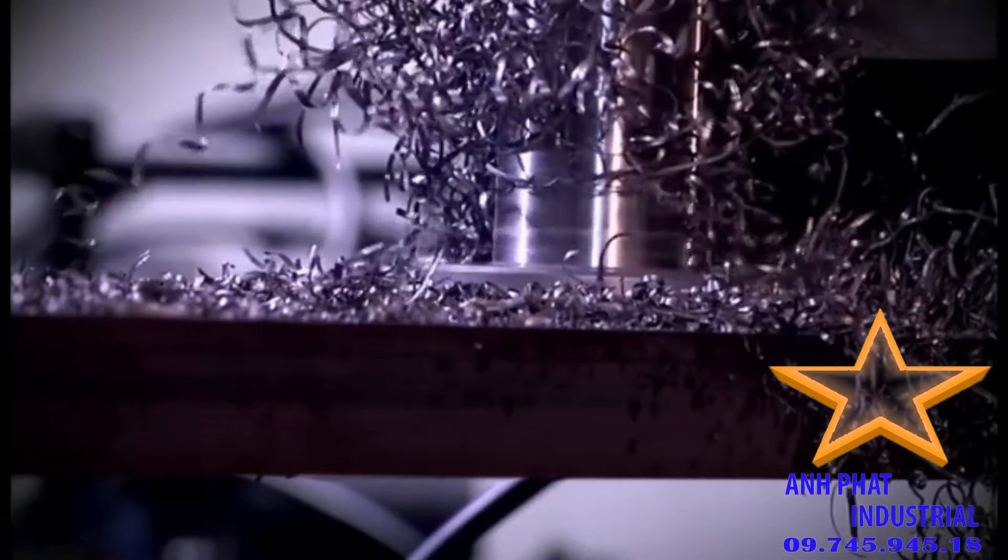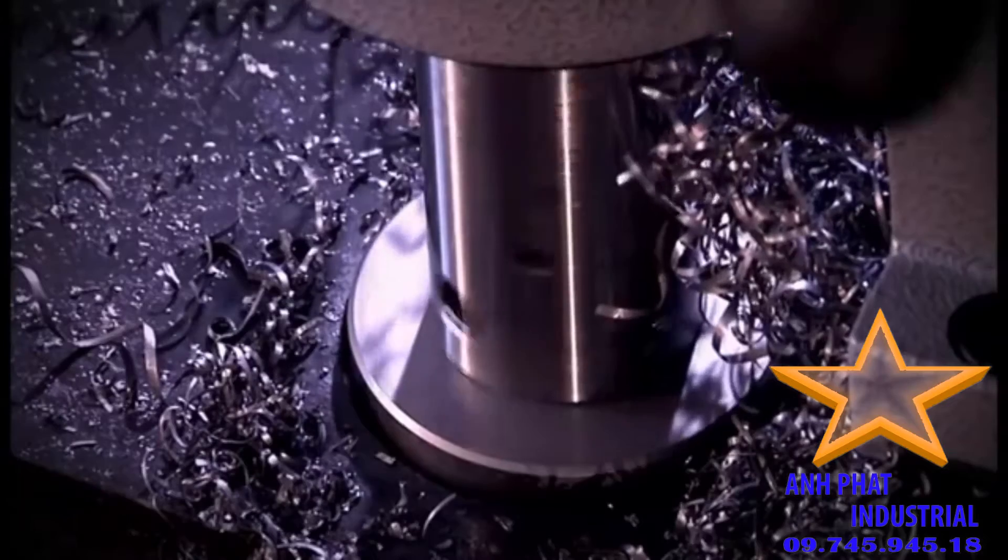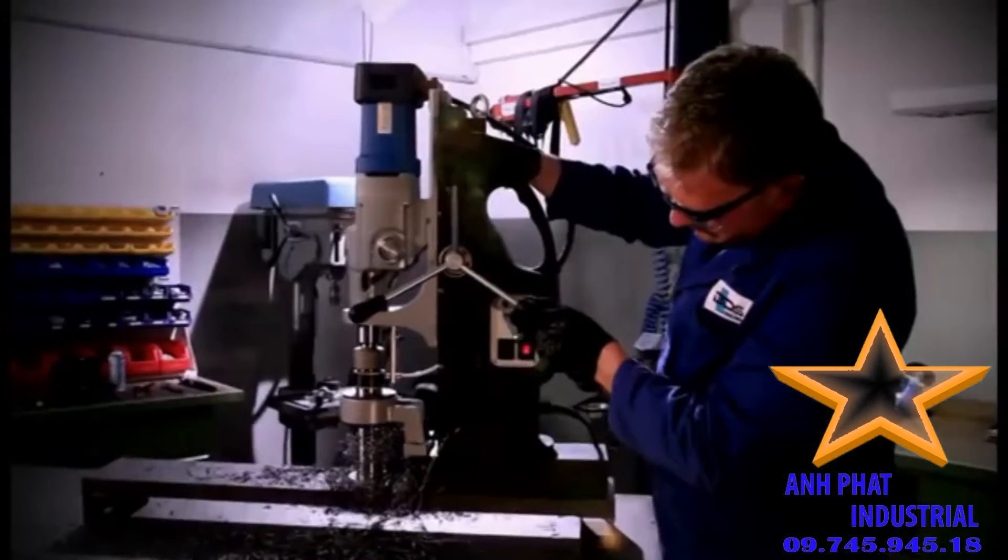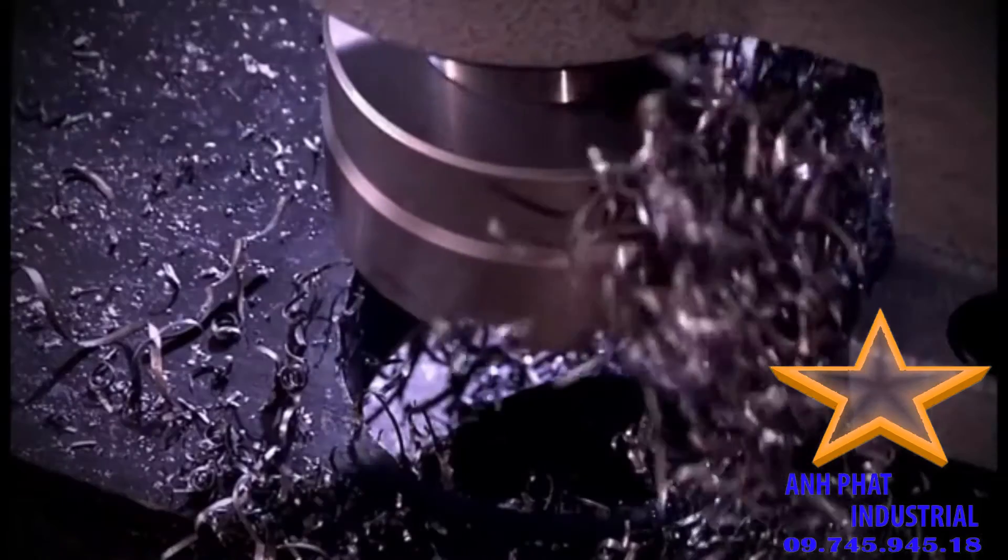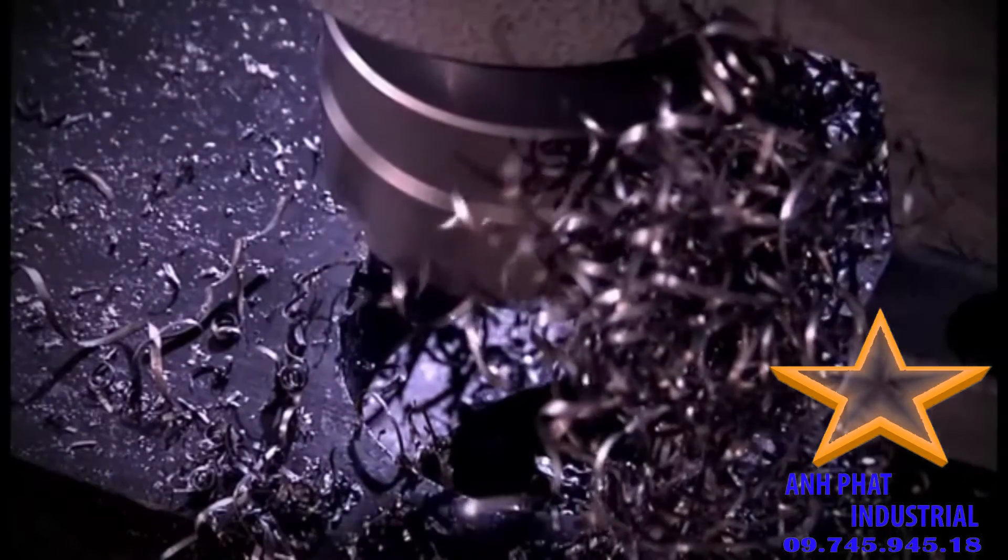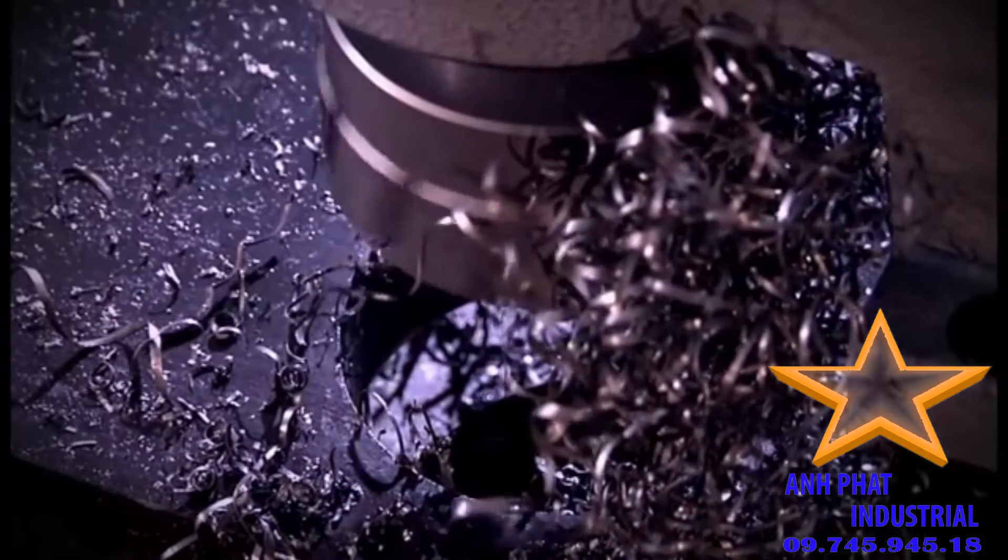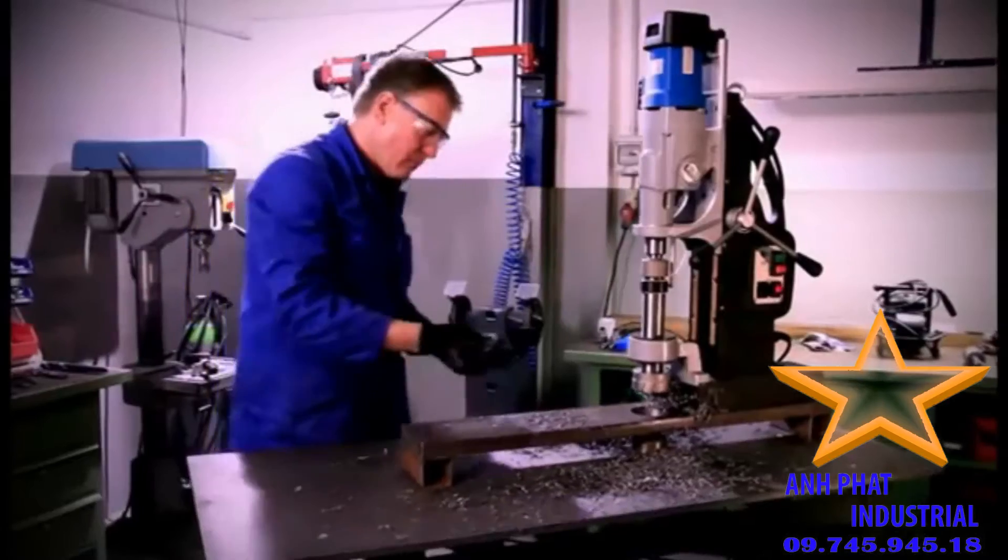Another recommendation: Carbide tools are cooled with cooling lubricant BDS 6000. HSS core drills are lubricated with cutting oil BDS 5000, lubrication spray BDS 5200 or cutting paste BDS 5500.